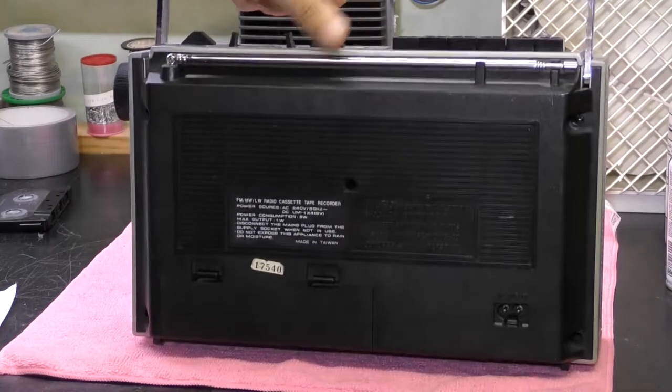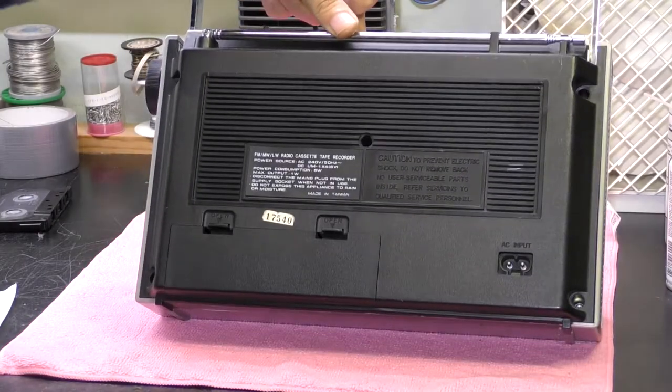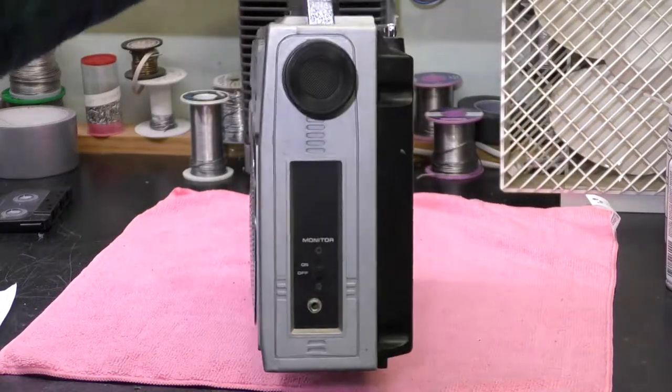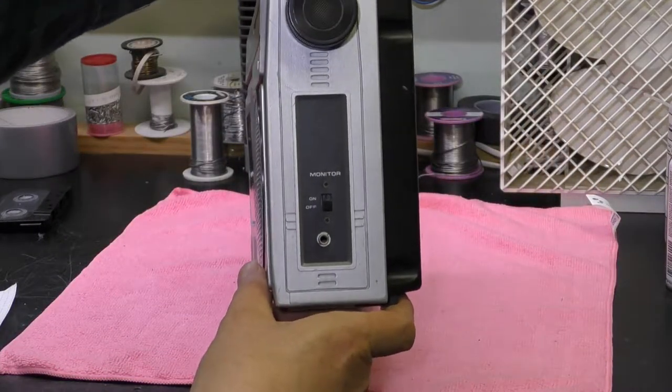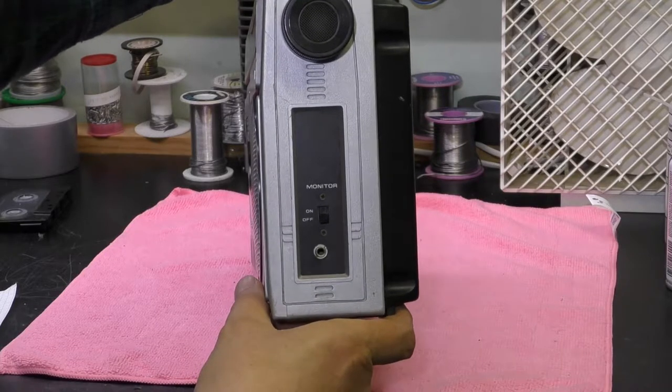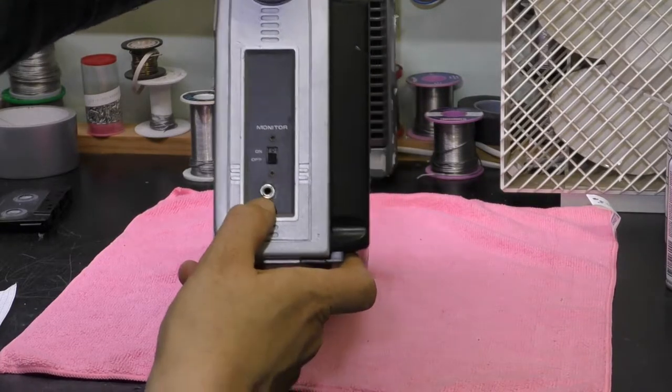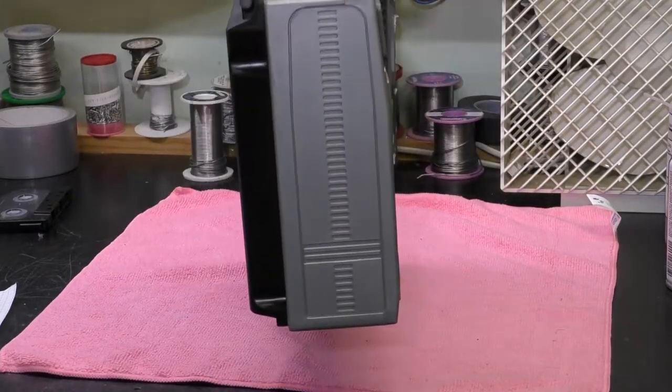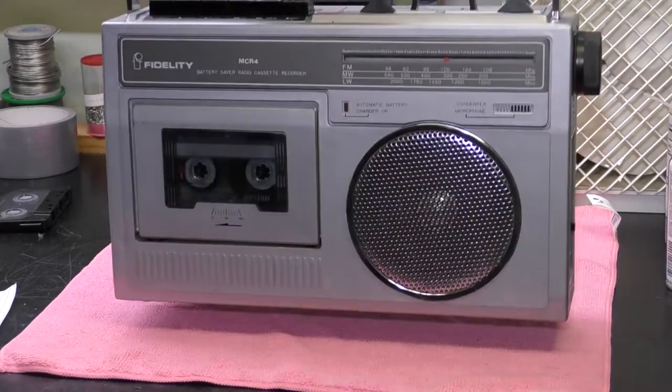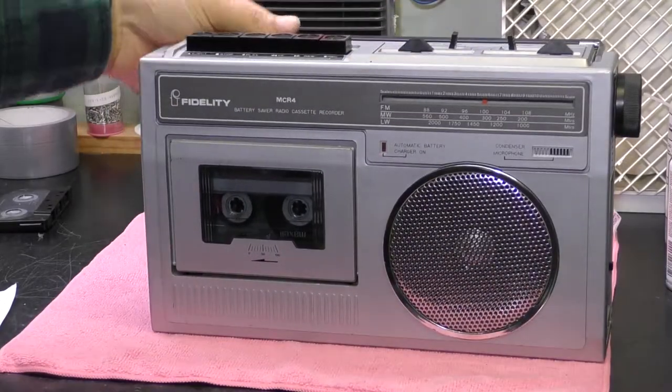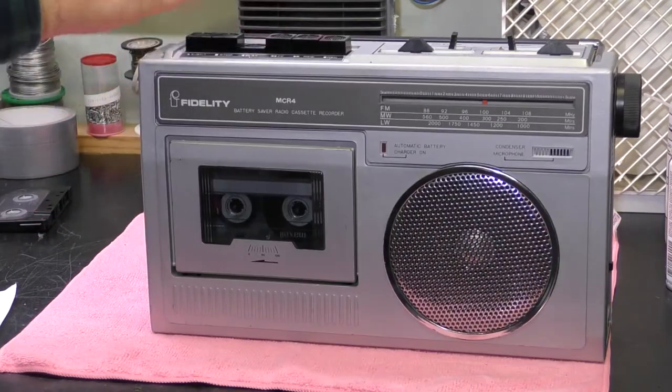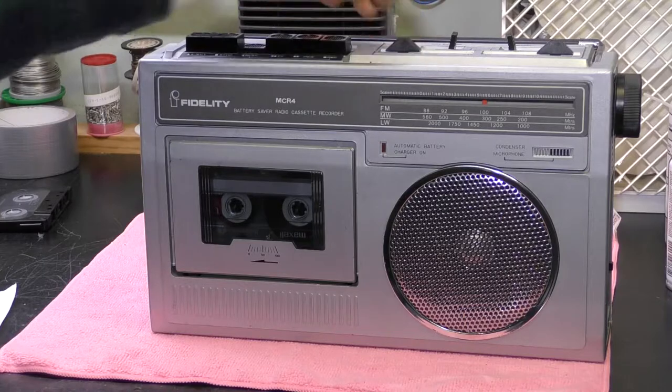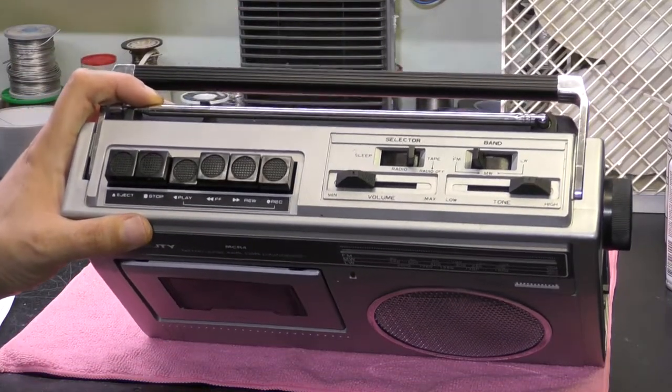Around the back there's a mains inlet and battery compartment which takes four D cells. There is a monitor switch that'll be for recording, so it probably hasn't got a variable monitor on it. I assume that's an earphone jack that almost looks like an afterthought. That's all the sockets you've got, so not much versatility for recording. It goes reasonably loud. I think you can hear the motor's quite noisy.